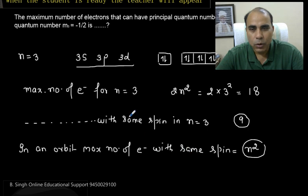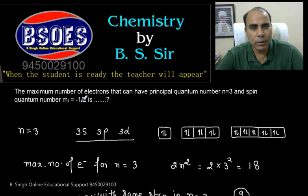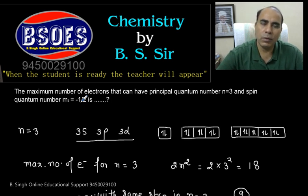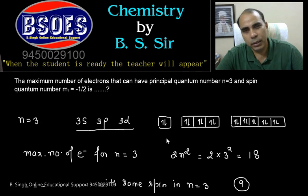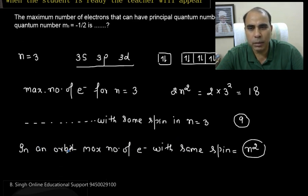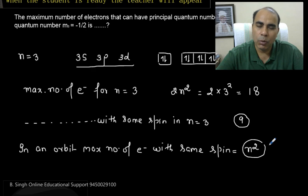Now, if you look at this, n is equal to 3 was given to us. And minus half was given to minus half. Whether plus half or minus half, the answer will be the same. Because half of the electrons spin will be positive and half will be negative. That's why we have generalized it. In an orbit, maximum number of electrons with the same spin will be n square. Take positive spin or negative. n is equal to 3, so take a square of 3. How will the answer come? 9.